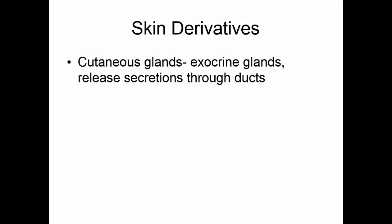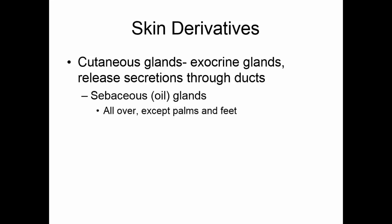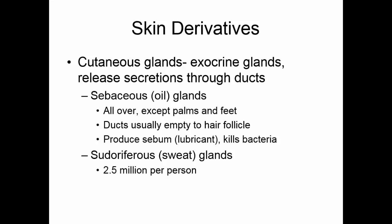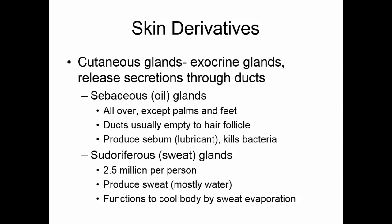Skin derivatives include the various cutaneous glands, which are exocrine glands that release secretions through ducts to some surface. Sebaceous glands are oil glands found all over the body except the palms and soles. Their ducts usually empty into hair follicles, and they produce sebum — an oil that lubricates dead skin cells and hair and has antibacterial properties. The sudoriferous glands are the sweat glands — about 2.5 million per person, pretty evenly distributed. They produce sweat, which is mostly water, and help us cool off through evaporation.